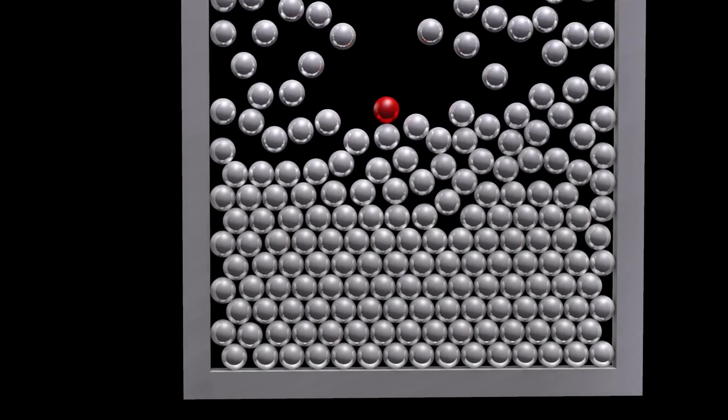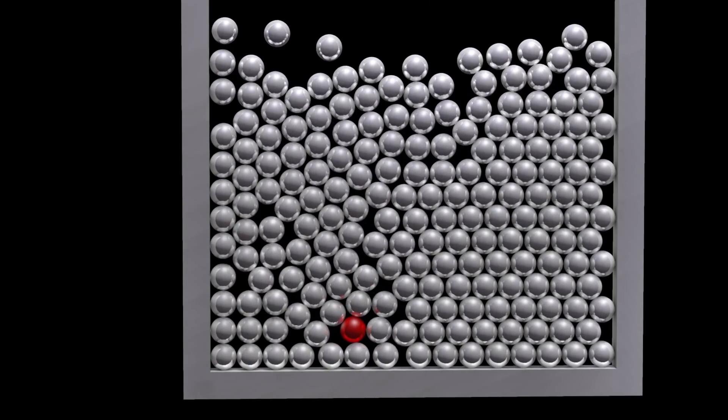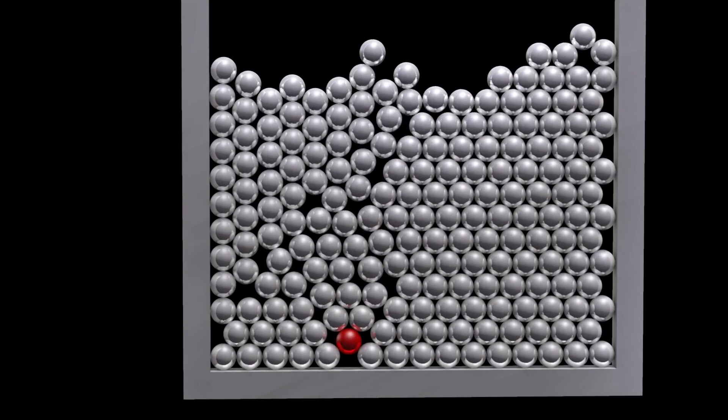The red sphere has 100 times the density of the white spheres, and it quickly sinks to the bottom when gravity is present.